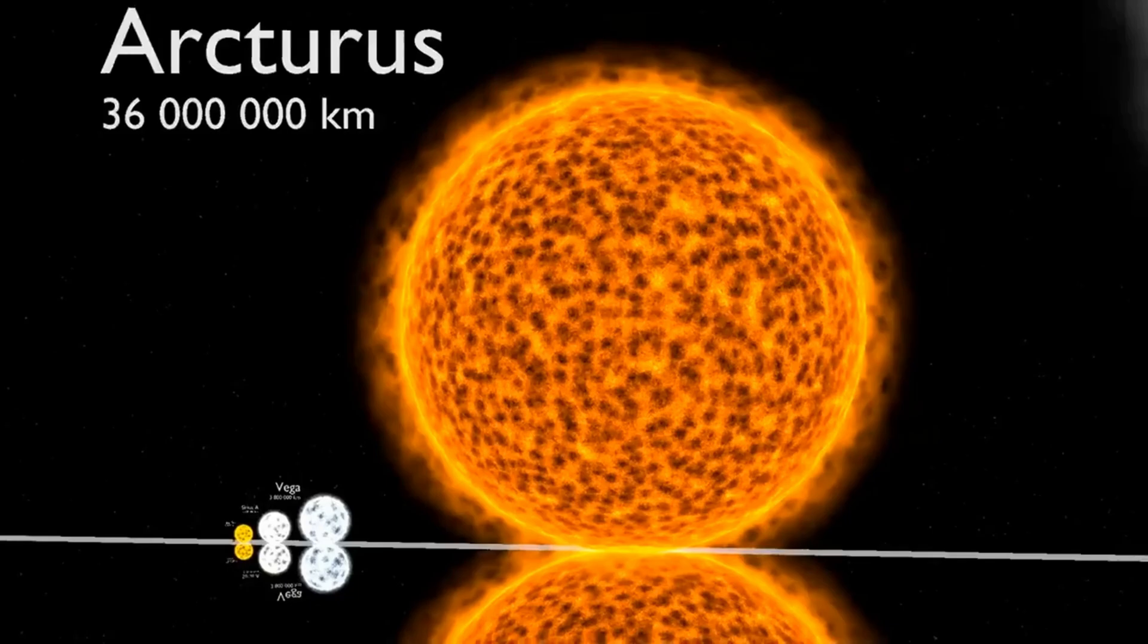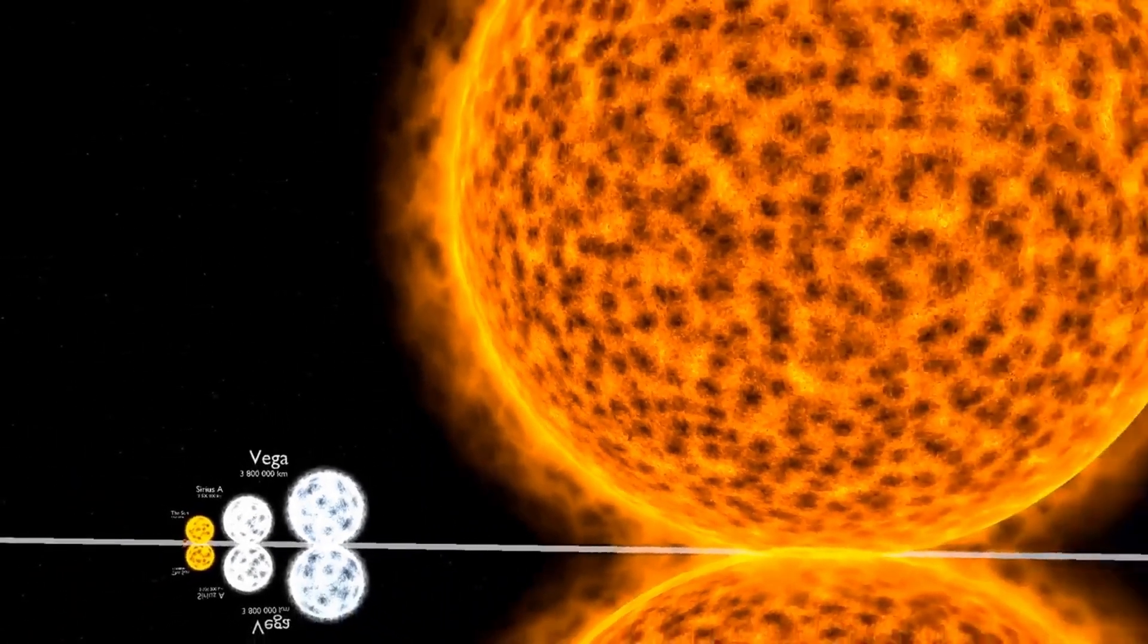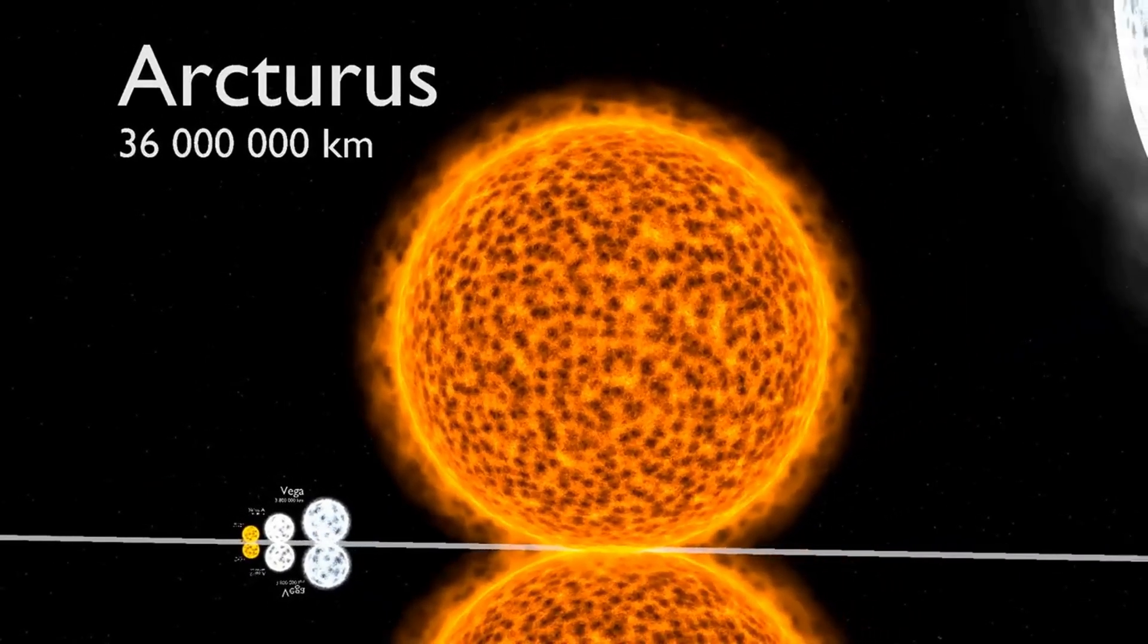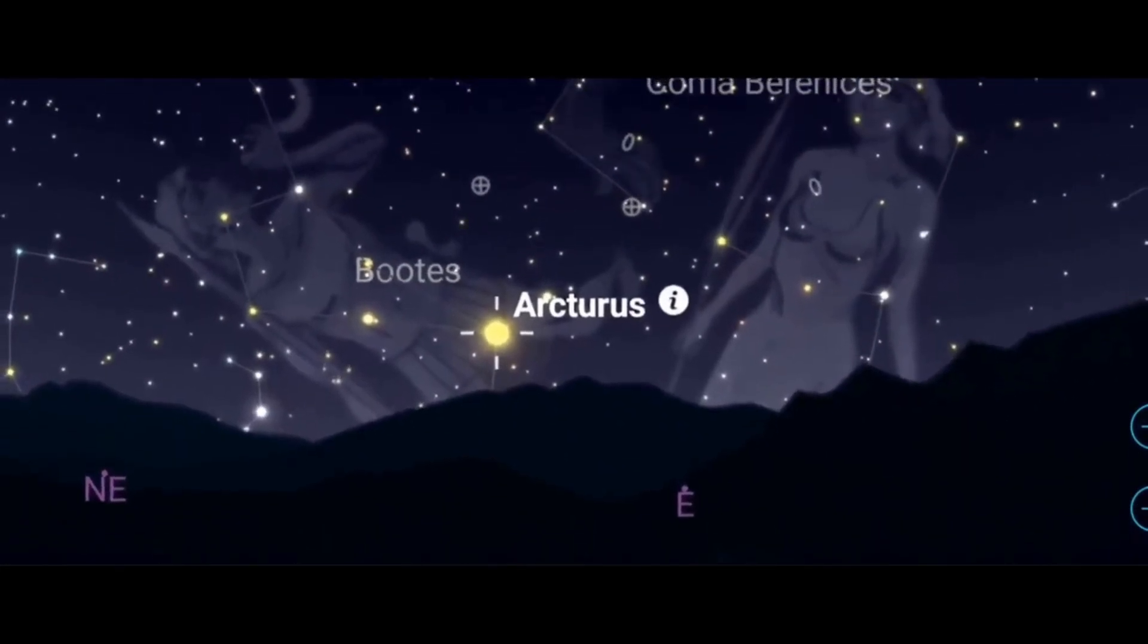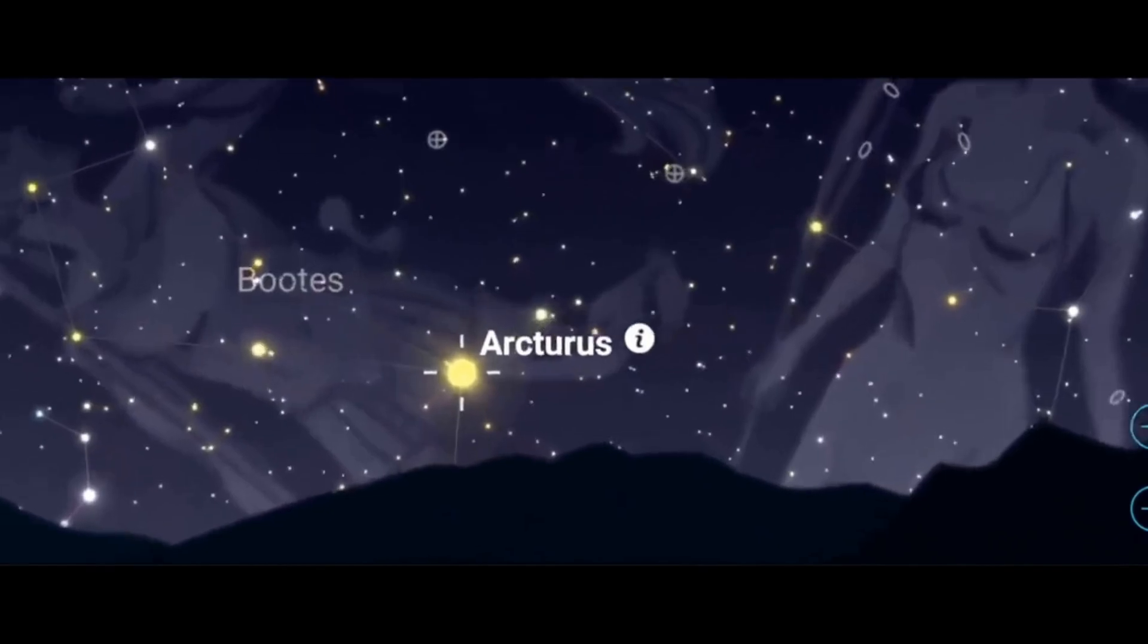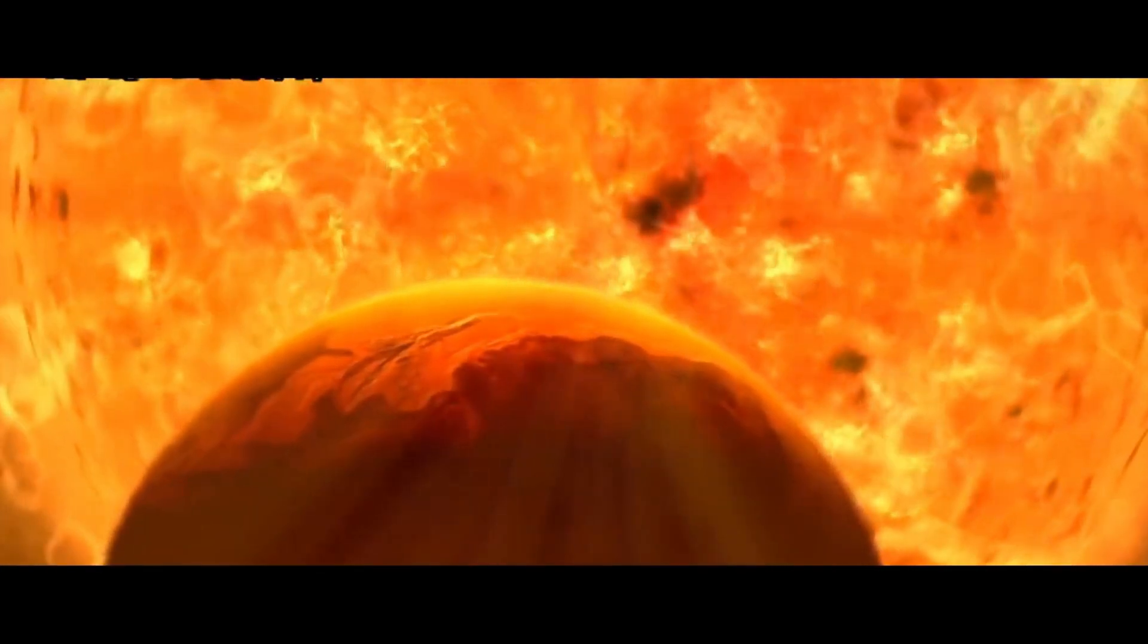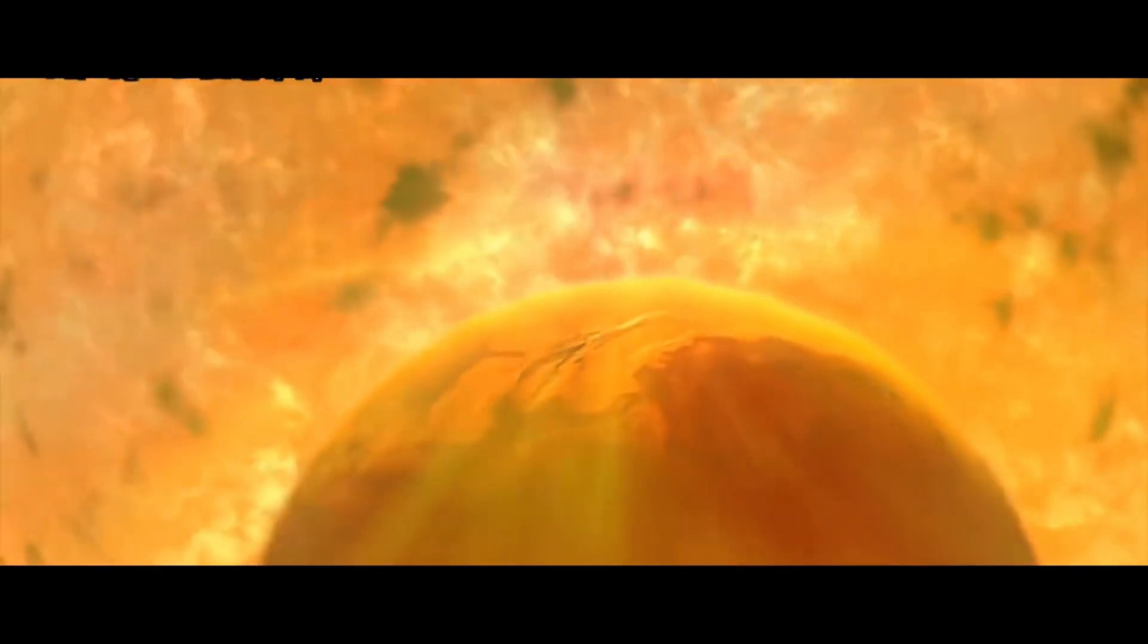The next star we're talking about is Arcturus. Arcturus has a diameter that's 26 times larger than the sun, and a volume that's 18,000 times greater. Arcturus is located in the constellation Boötes and is the brightest star within it. Although Arcturus is big, its mass isn't much larger—it might be equal to the sun's mass, or at most 1.5 times greater. In 5 billion years, our sun will become a red giant star, possibly quite similar to Arcturus' current state.